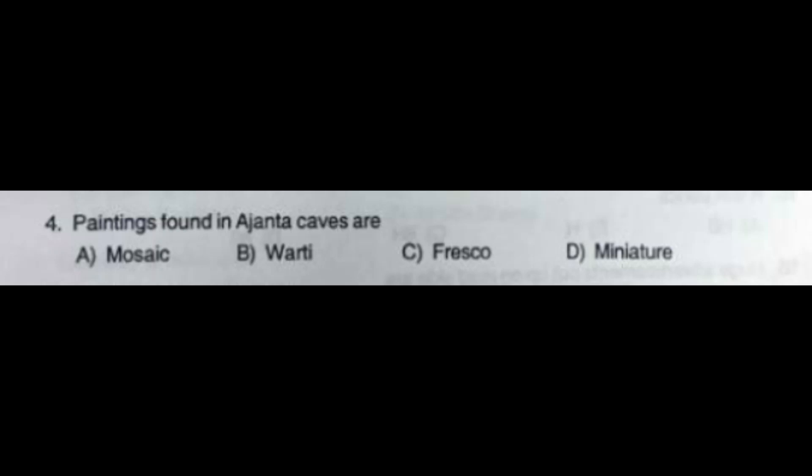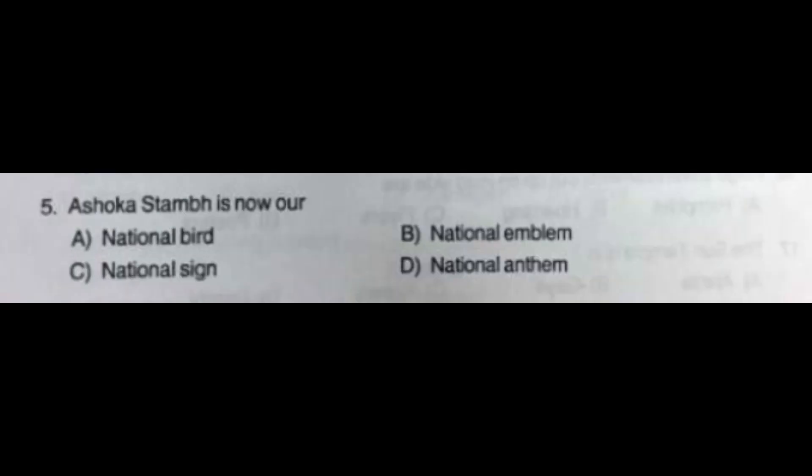Question number 4: Paintings found in Ajanta Caves are — option A: Mosaic, option B: Varty, option C: Fresco, option D: Miniature. The correct answer is option C: Fresco. Question number 5: Ashoka's emblem is now our — option A: National Bird, option B: National Emblem, option C: National Sign, option D: National Anthem.